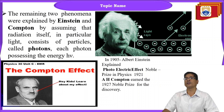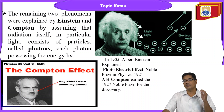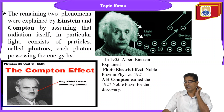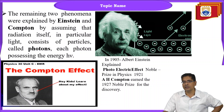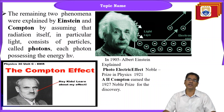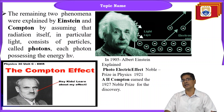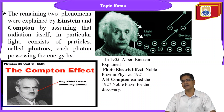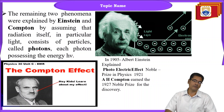Einstein and Compton explained these phenomena by assuming that radiation itself in particular consists of particles called photons, and each photon possesses energy h nu. The interaction of light with matter can be explained by the photoelectric effect, Compton effect, and Planck's theory of radiation.